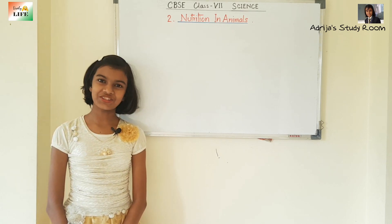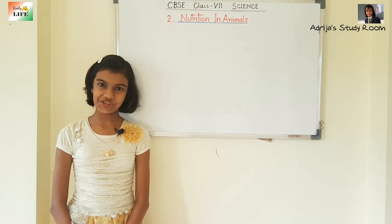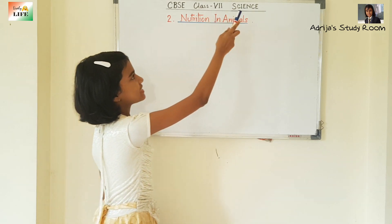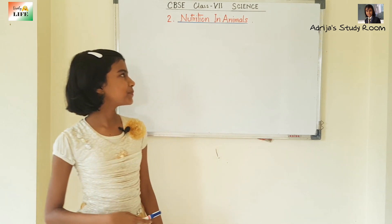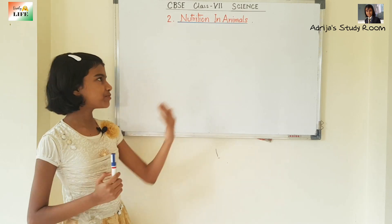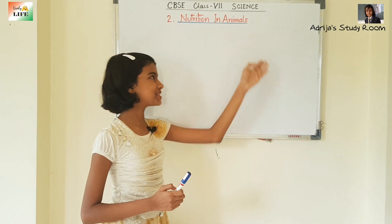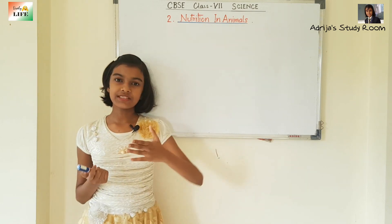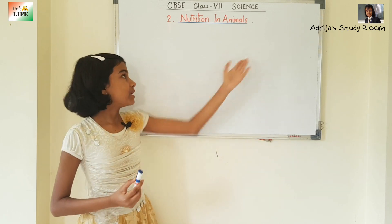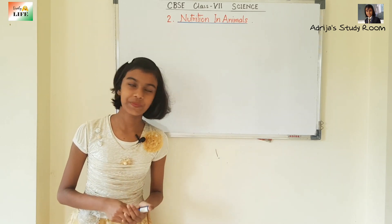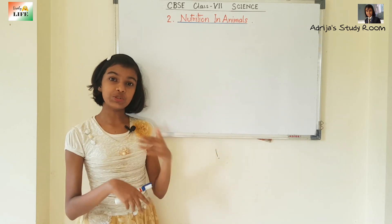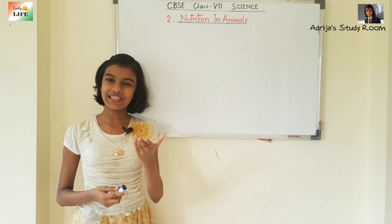Hello everyone, I am Adreja. Welcome to my study room. In this video, we are going to learn about the second chapter of class 7 science: nutrition in animals. In the previous chapter, we learned about nutrition in plants. In this chapter, we are going to learn about nutrition in animals. We know that animals have to depend on plants, directly or indirectly, for food, so animals exhibit heterotrophic mode of nutrition. We are going to learn how animals intake food and utilize it for energy, growth, etc.